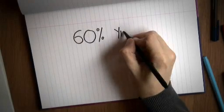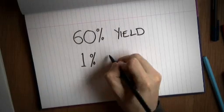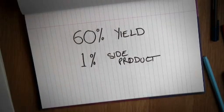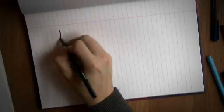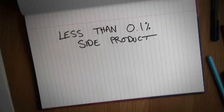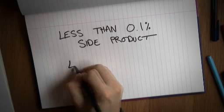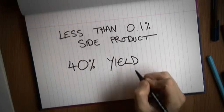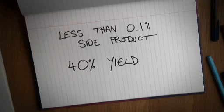You might be able to get, say, a 60% yield with only 1% of your side product left in. But if you had to have a better purity than that, say, less than 0.1% unwanted side product, you might end up losing more product in that process and only getting a yield of, say, 40%.